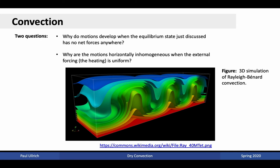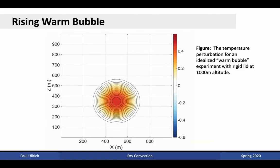Here's a three-dimensional depiction of Rayleigh-Bernard convection. The rising motions tend to be locally confined with a large subsidence region surrounding them. The width of these convective cells is a function of the underlying characteristics of the fluid. Two questions still emerge: why do these motions develop when the equilibrium state has no forces anywhere except for a temperature gradient? And why are the motions horizontally inhomogeneous when the external forcing is uniform — that is, if you impose uniform underlying heating, why do you get convective cells with a characteristic length scale?